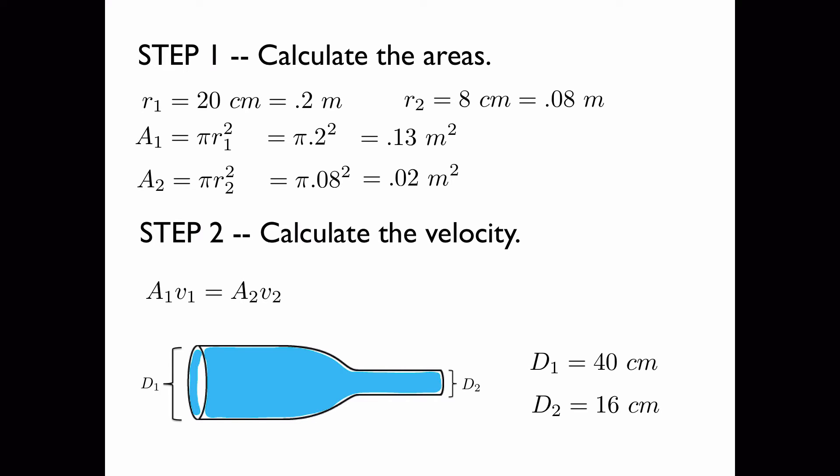So if you have a larger area, you have a smaller velocity, and if you have a smaller area, you have a larger velocity. In this case, we're going from a large area to a smaller area so the velocity will increase.